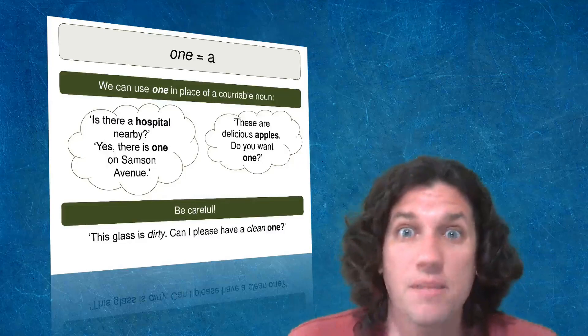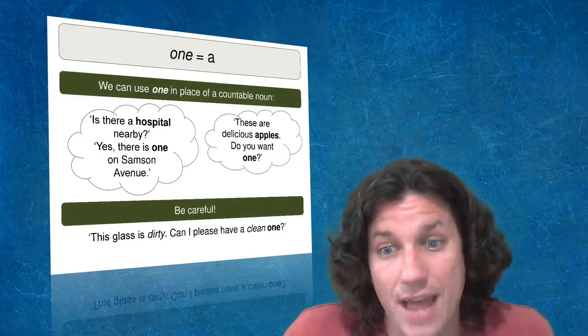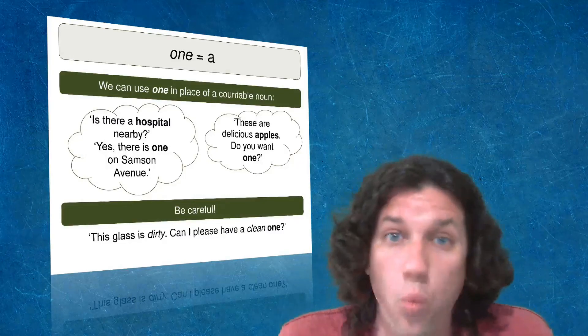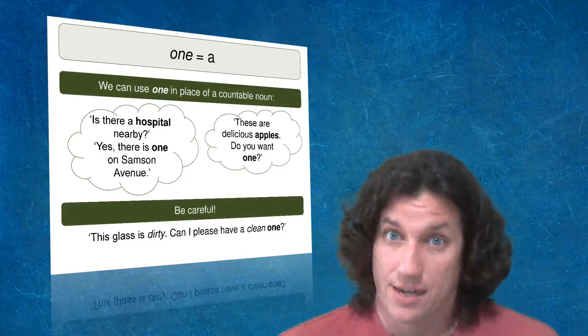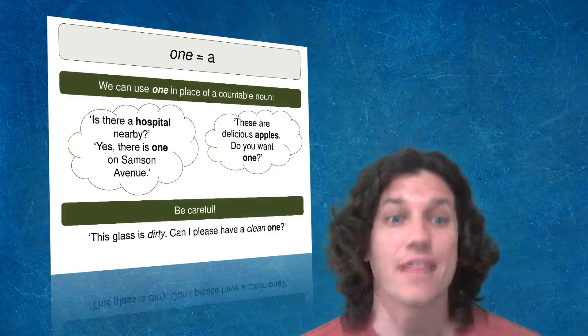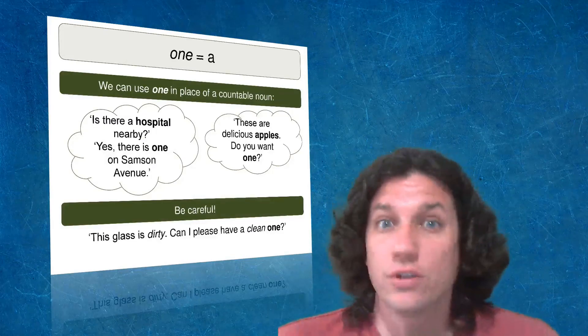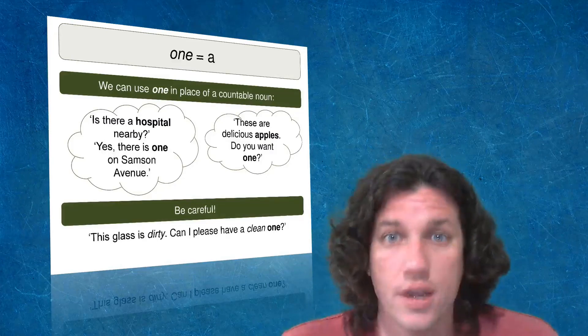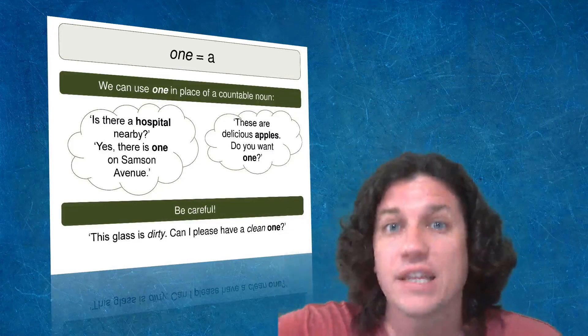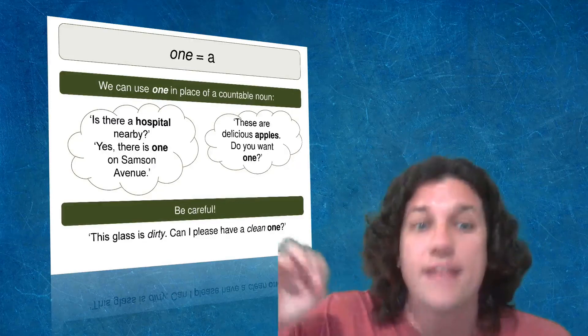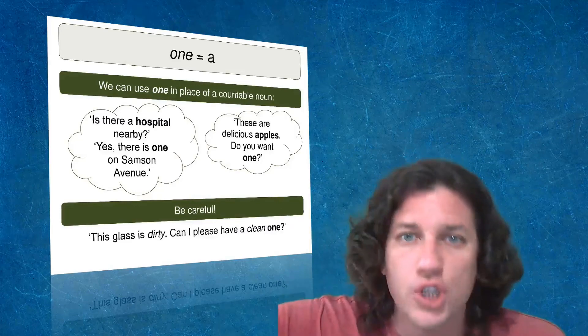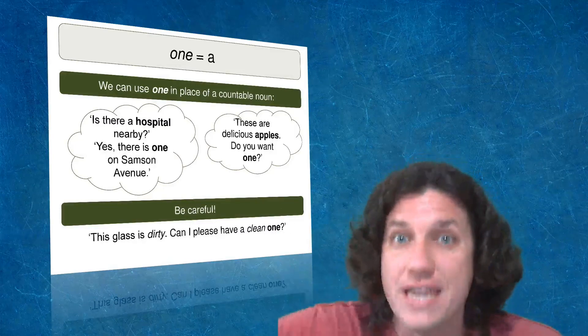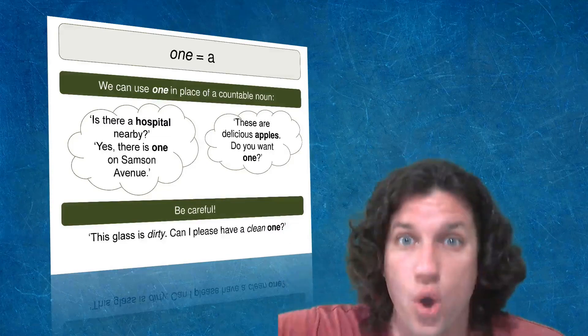So when we look at demonstrative pronouns, what I mean by that is one, we can use one in place of a countable noun. So let's look at that first example question. Is there a hospital nearby? Yes, there's one on Samson Avenue. These are delicious apples. Do you want one? So this is a case where the student needs to learn first that they've got to learn how to use one because we're setting it up for your students to be able to learn how to say things like these ones and those ones.